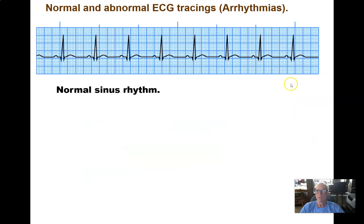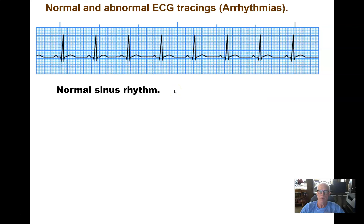Here we see a series of identical waveforms produced by a rhythmically beating heart — the normal finding. We have P wave, delay, QRS complex, delay, and then T wave. This is called the sinus rhythm, because the sinoatrial node is the controller and pacemaker of this rhythm.